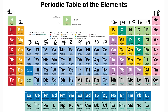The elements in a group share similar chemical properties. For instance, group 1 is known as the alkali metals. The alkali metals include lithium, sodium, potassium, rubidium, cesium, and francium.